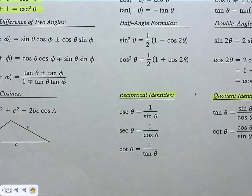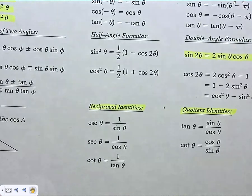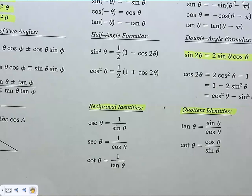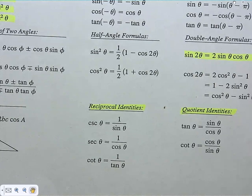I also know that tangent is sine over cosine, and cotangent is cosine over sine — those are the quotient identities. The only other thing I see often enough in calculus to have memorized is that sine of 2θ is 2 sine θ cosine θ. The rest of that page — if you need anything from it on a test, I will give it to you. The proof of the Pythagorean identities uses the Pythagorean theorem with a right triangle labeled opposite, adjacent, hypotenuse.